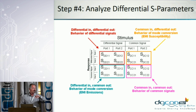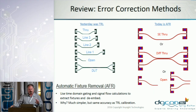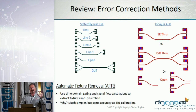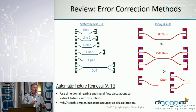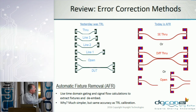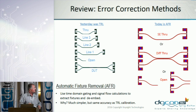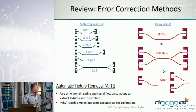S-parameters are the basis for all other domains of analysis. To review TRL: you need to build five structures — through, line one, line two, line three, and the open. Building five structures is a lot more work than building one structure or just using the fixture itself. Automatic fixture removal has pretty much replaced TRL in 90% of labs around the world — probably being used in around 500 different labs. The reason is obvious: it's much simpler to use one structure and it's proven to be just as accurate. So why not save the time?